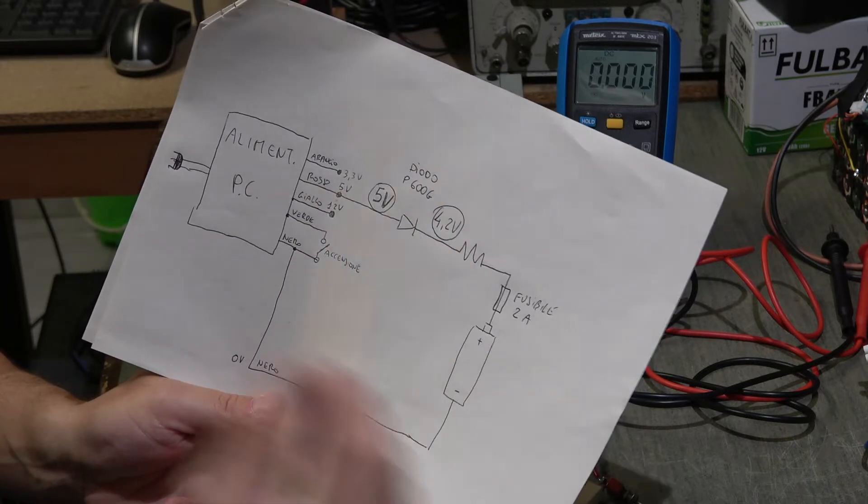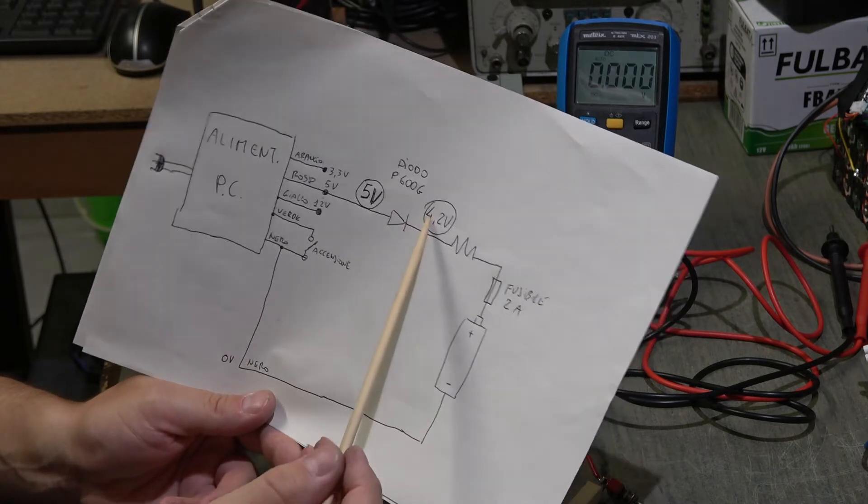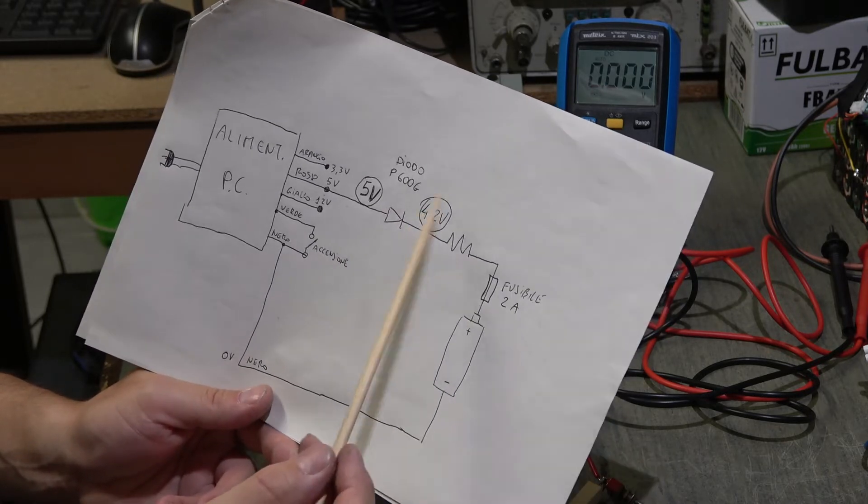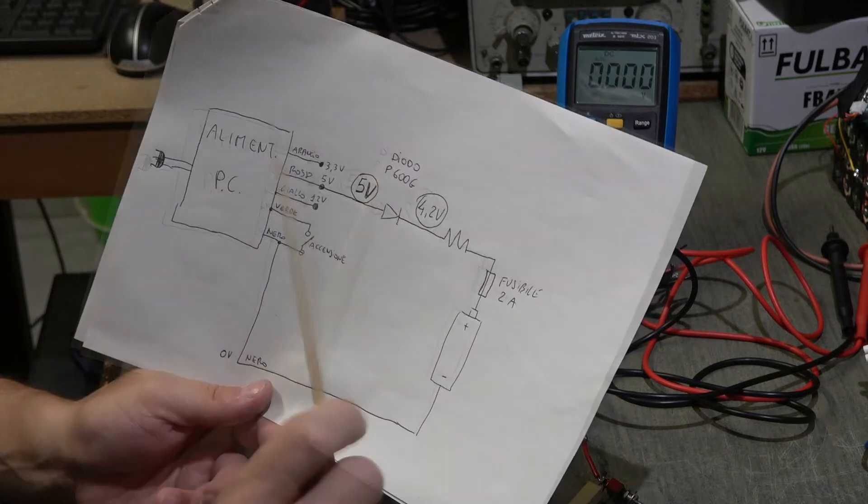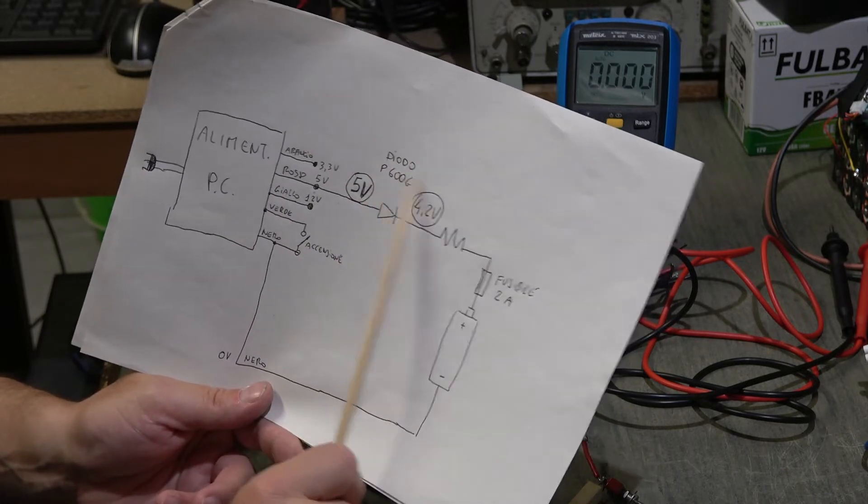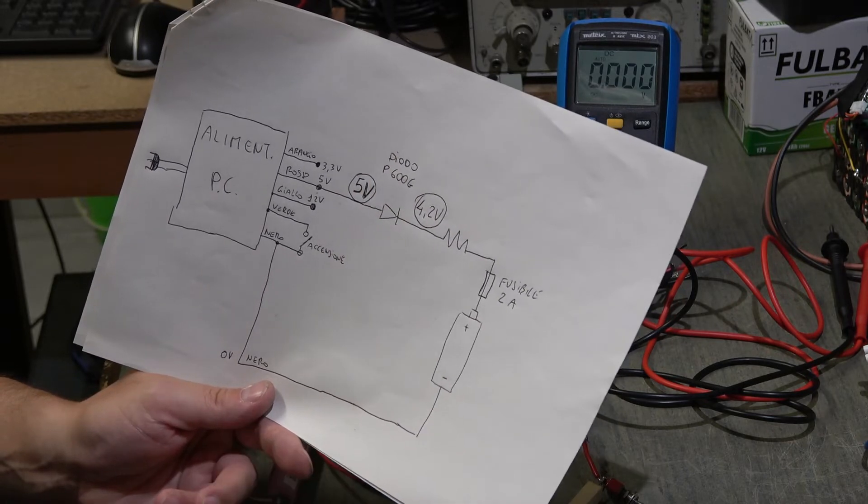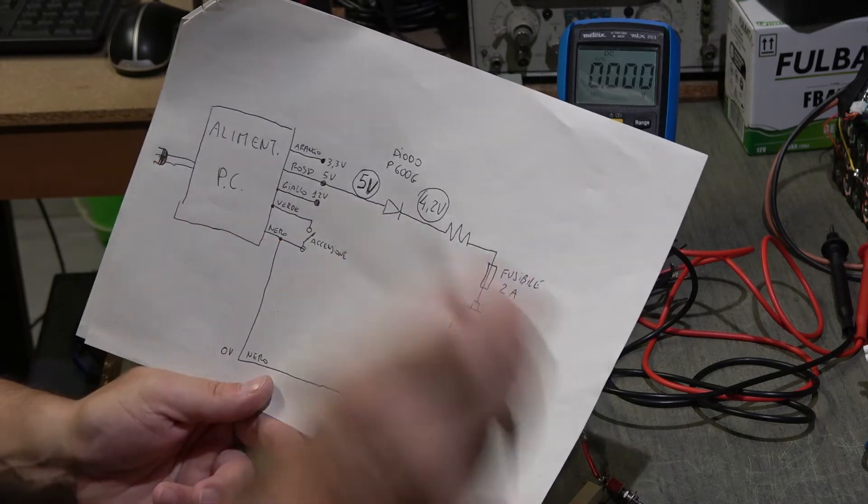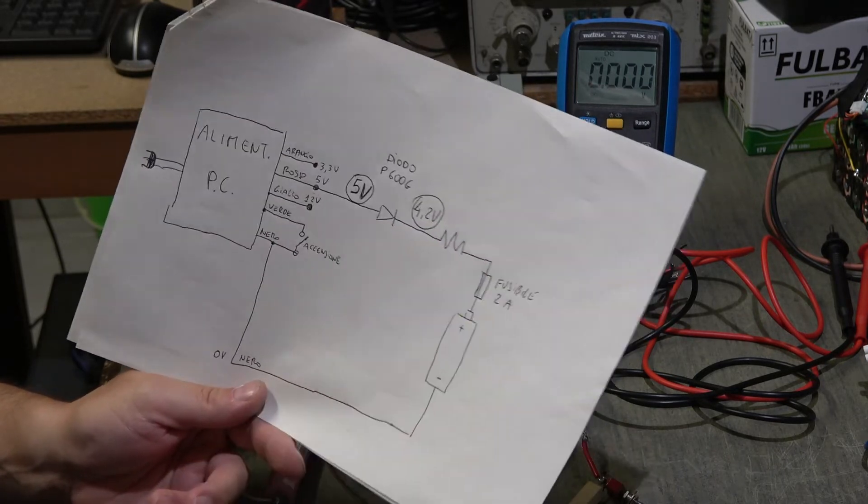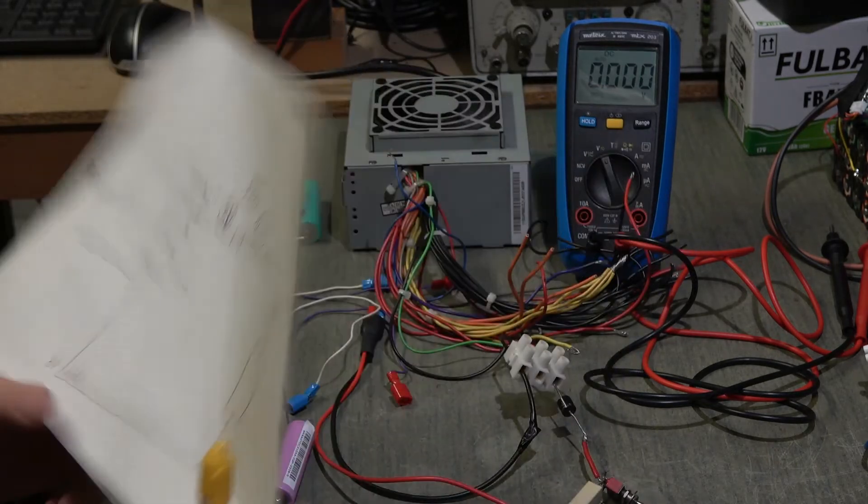We must by force go down to 4.2 volts, therefore I thought of putting a diode - it is a diode of 6 ampere and it makes a voltage drop of 0.7 to 0.8 volts approximately. Then I put a resistance.